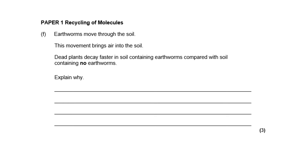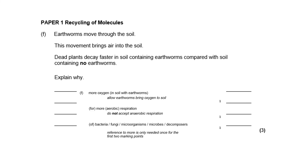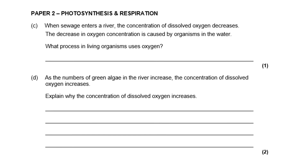Paper one — so this is a paper one question, but it does have some information about recycling molecules. It talks about dead plants decaying faster in soil containing earthworms compared with soil containing no earthworms. The first two parts of the question — more oxygen, more aerobic respiration — that's paper one. But the part about use of microbes, decomposers, bacteria, fungi — that's paper two.